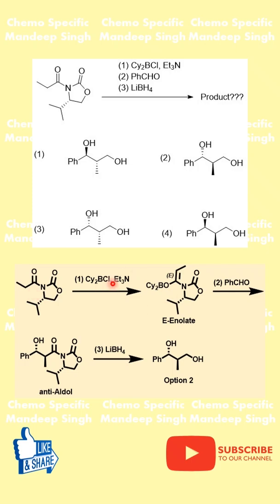In the first step of the reaction, this particular ketone reacts with chlorodicyclohexyl borane to give an E-enolate. Click on the title of the video to know more about why the E-enolate forms under these conditions and which conditions are needed to get the Z-boron enolate.